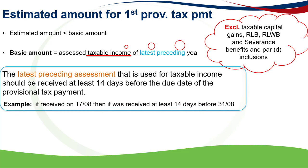For example, if the assessment was received on the 17th of August, and you are making a provisional tax payment due on or before the 31st of August, then it was received at least 14 days before the due date. In cases where the latest preceding assessment was not received at least 14 days before the due date of the first provisional tax payment, then the assessment for the year preceding that year will be used, if it was also received at least 14 days before the due date.